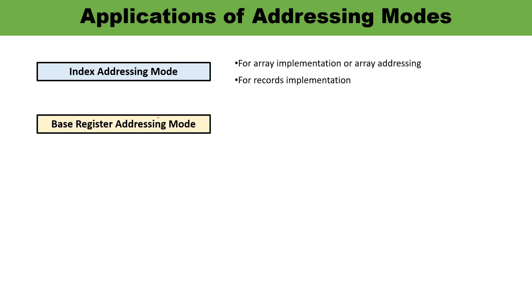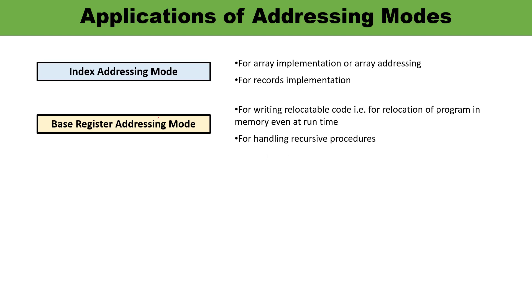Next is base register addressing mode. Here, the content of the base register is added to the address part of the instruction to obtain the effective address. This addressing mode can be used for writing relocatable code or for handling recursive procedures.